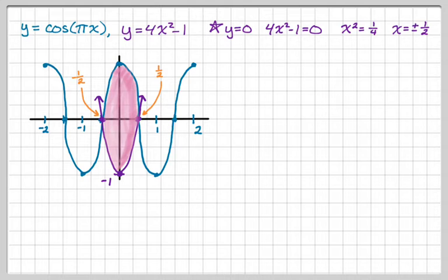So now we can start our integral. So it's the integral from negative 1 half to 1 half, and then it's the top curve, which is cosine of pi x minus the bottom curve, which is 4x squared minus 1, which I'm putting in parentheses to make sure I can distribute that negative, and then we have a dx.